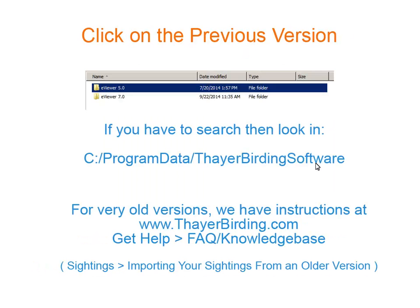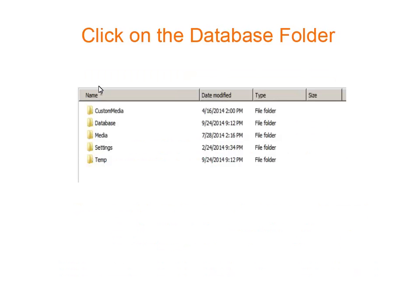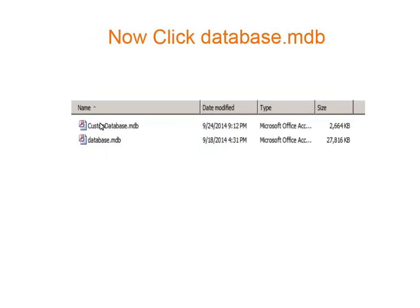Now click the name of your previous version. If you're having trouble locating this, please read the Frequently Asked Questions section at thayerbirding.com. Next, click the Database folder. Then click Database.mdb.